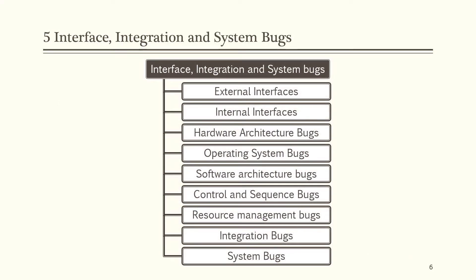The fifth category is interface, integration and system bugs. There are nine types in total, which include external interfaces, internal interfaces, hardware architecture bugs, architecture bugs, operating system bugs, software architecture bugs, control and sequence bugs, resource management bugs, integration bugs, and system bugs.